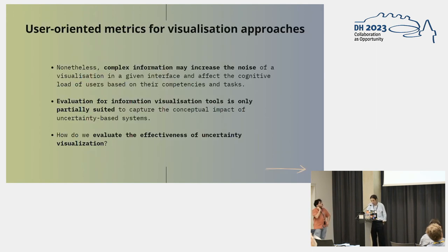In particular, complex information such as uncertainty can be conveyed in maps using techniques that alter existing symbology through manipulating visual variables or adding new objects to the interface. Moreover, adjacent views between certain and uncertain data along with the dynamic interface will be employed for the same purposes. Here we see an example of emotional maps which shows emotional factors' impact on the experience of migrations. Nonetheless, complex information may increase the noise of a visualization and affect the cognitive load of users based on their competencies and tasks.